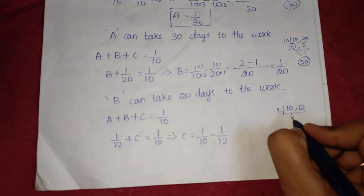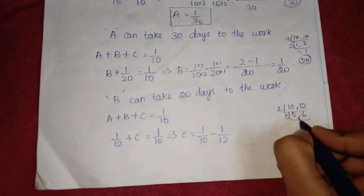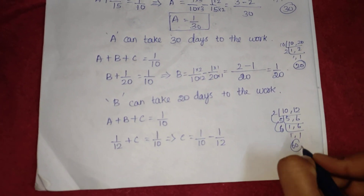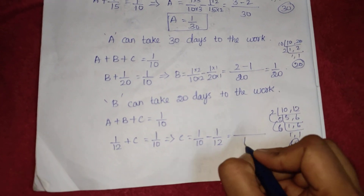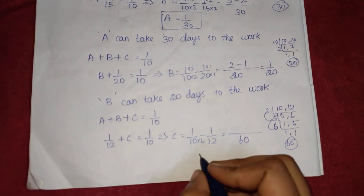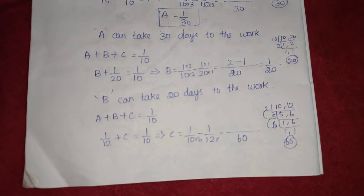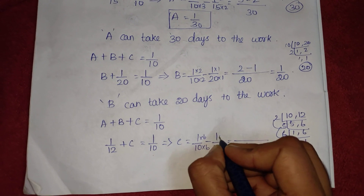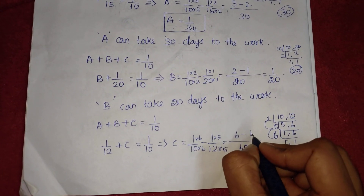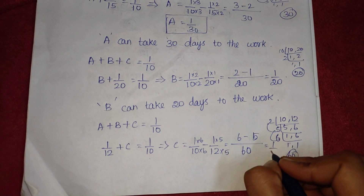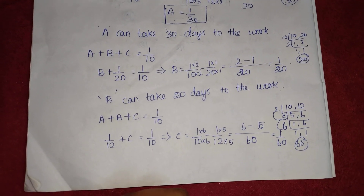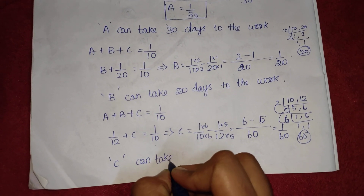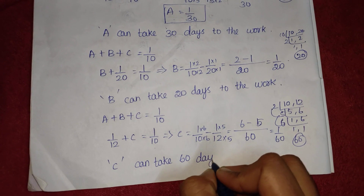Now for C, we take A plus B plus C minus A plus B: that is 1 by 10 minus 1 by 12. The LCM of 10 and 12 is 60. So we get 6 minus 5 over 60, which is 1 by 60. So C can take 60 days to do the work.